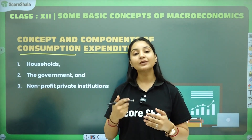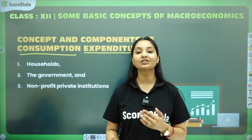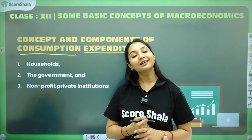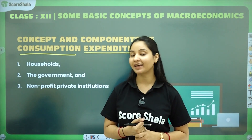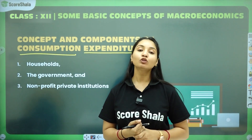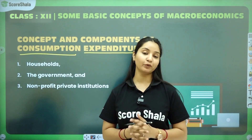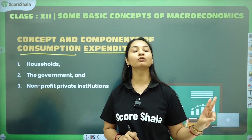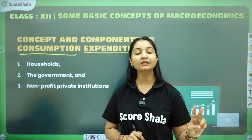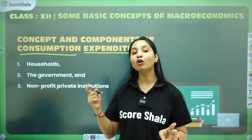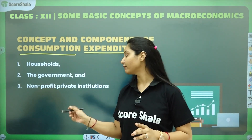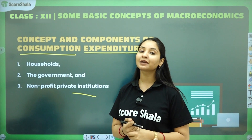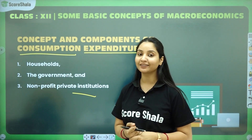Agar hum hungry hai, bhooke hai, toh hum khana khayenge - humne khane ko consume kiya, toh humari bhook khatam ho gayi. So, consumption ke upar jab bhi kharcha kiya jata hai - expenditure aapka kharcha hota hai - toh usko aapan consumption expenditure ke naam se jaante hai. Iske teen components hote hai.